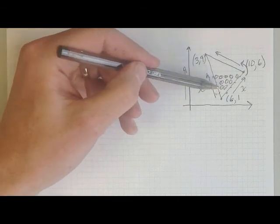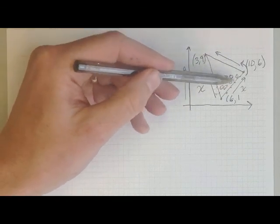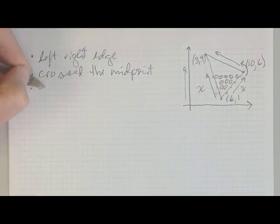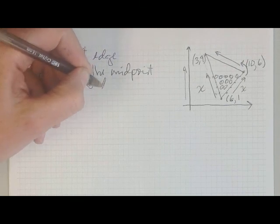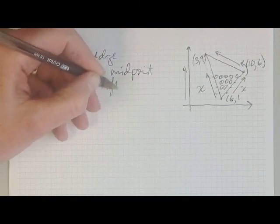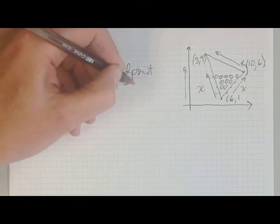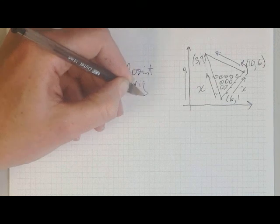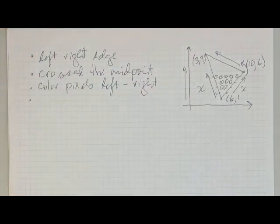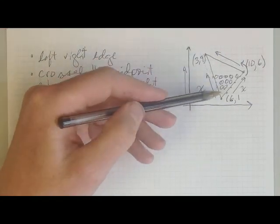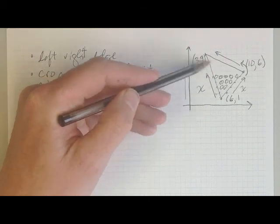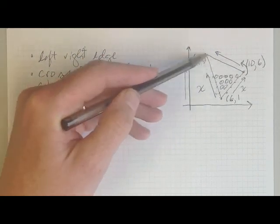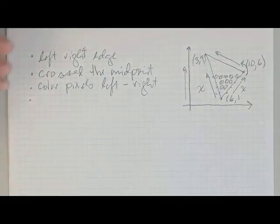I also need to color the pixels between the left and the right edge. And the final thing that I need to do is interpolate the colors up the left and the right edges of the triangle.